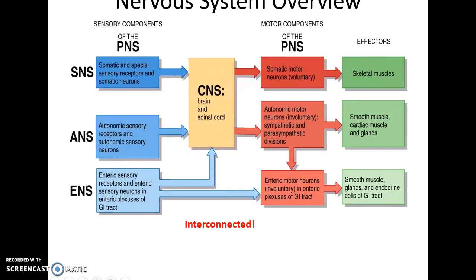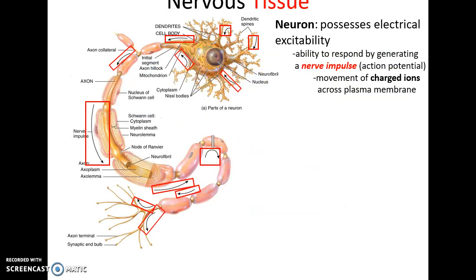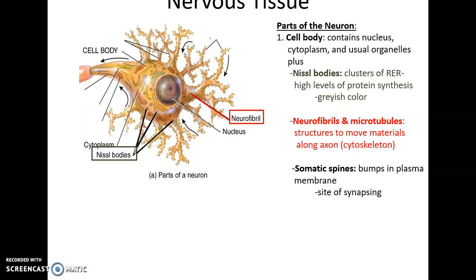A neuron is the most famous cell of nervous tissue. The neuron possesses electrical excitability — it can receive a stimulus causing it to transmit a charge across its plasma membrane, involving the movement of charged ions across the membrane to generate an action potential. The neuron has three main regions, the first being the cell body, which contains the nucleus, cytoplasm, and various organelles such as mitochondria and endoplasmic reticulum.